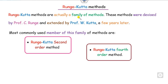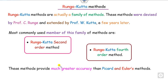The most commonly used members in this family are the Runge-Kutta second order method and the Runge-Kutta fourth order method. There is also a Runge-Kutta first order and third order. The advantage of these Runge-Kutta methods is that they have greater accuracy than the previously discussed Picard's and Euler methods.